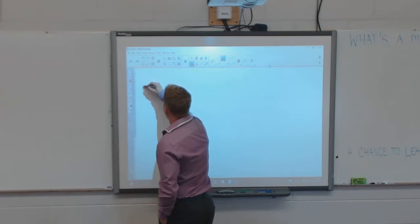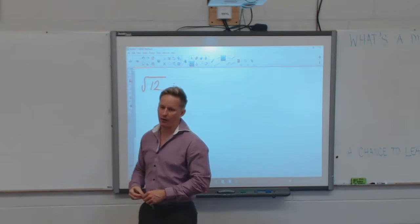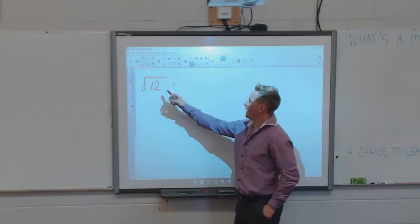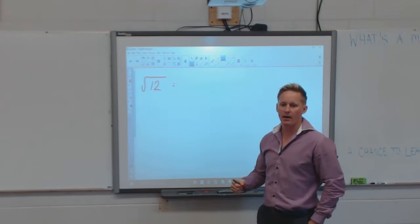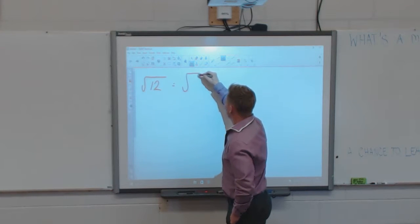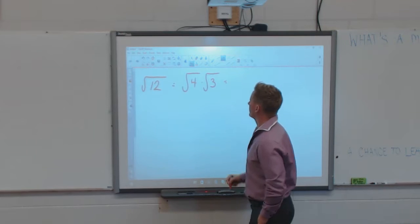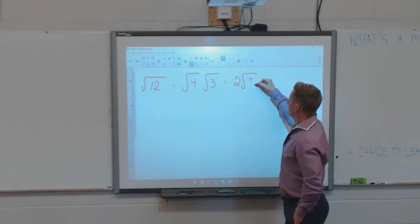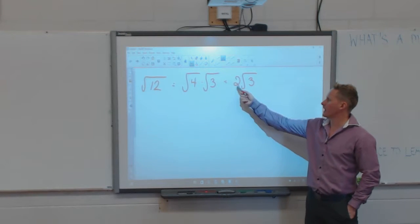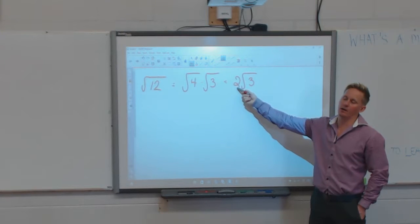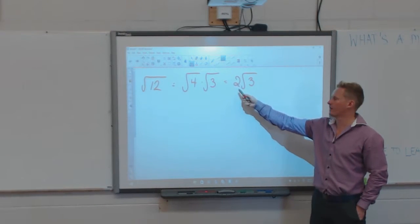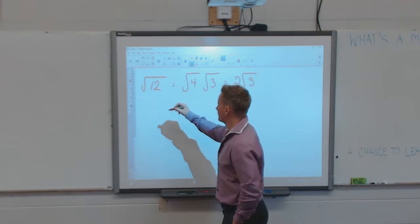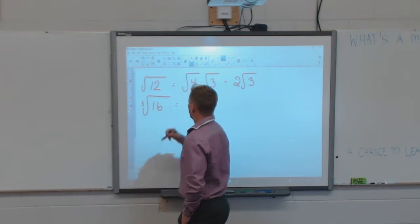The square root of 12 is considered an entire radical. I can change that entire radical into a mixed radical. How I do that is simple — I find a number that goes into 12 that's a perfect square. 4 does. So I change this to square root of 4 times the square root of 3, which is the same as square root of 12. What's the square root of 4? 2. That is what I refer to as a mixed radical. A mixed radical has a rational coefficient — not a 0, can be negative — and then you have a radicand, which is the value inside the square root.